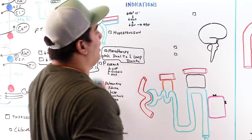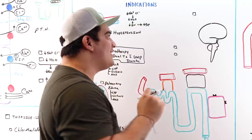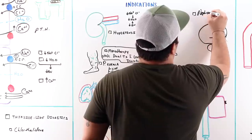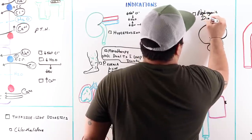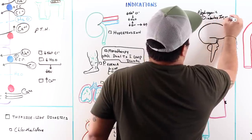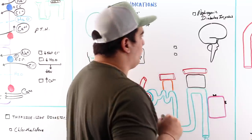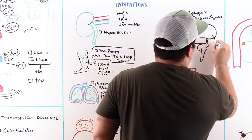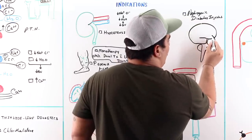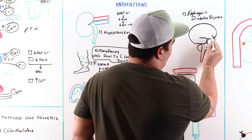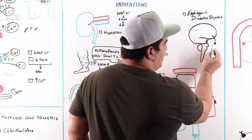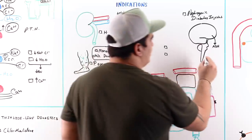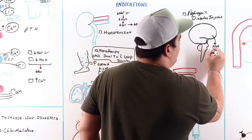Another important indication is nephrogenic diabetes insipidus. In this condition, ADH production is normal, but the V2 receptors in the collecting duct — which respond to ADH (vasopressin) — don't function properly. ADH normally signals the production and insertion of aquaporins into the cell membrane.